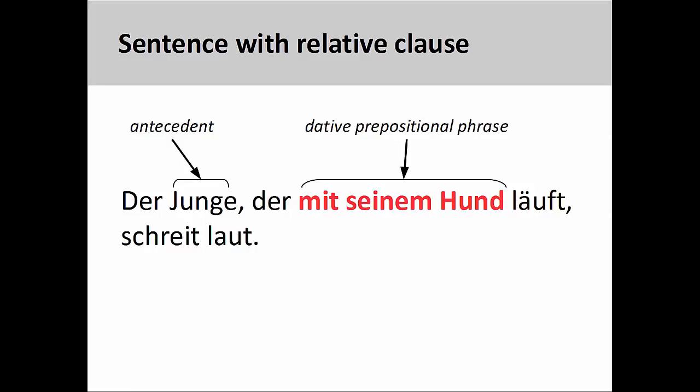Also in the relative clause is the dative preposition mit, with, followed by the object of this preposition, seinem Hund, his dog. Both the preposition and its object form a dative prepositional phrase. As we will see in the coming slides, these secondary modifiers will be inserted into the extended modifier after we insert the present participle.